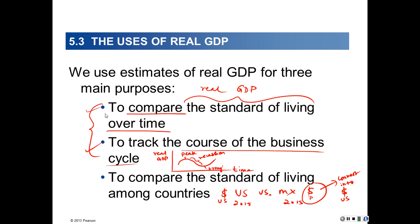And then we spent some time looking at the uses of real GDP. You recall what the uses of real GDP are? There are three main purposes of real GDP. The first two involve comparisons across time, and that's what real GDP is for. To compare GDP across time, we need to convert nominal GDPs into a common currency — real dollars.